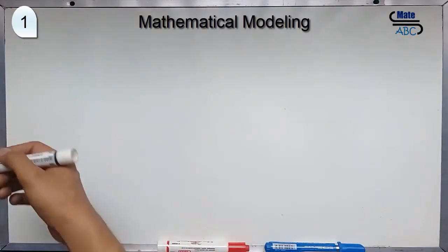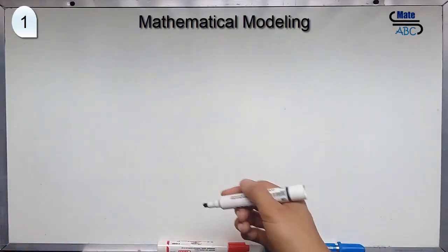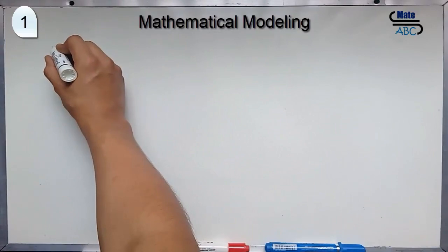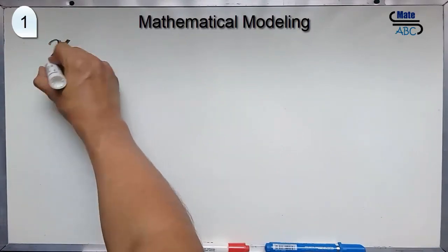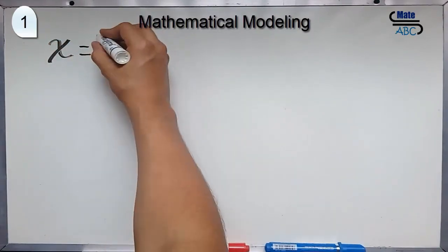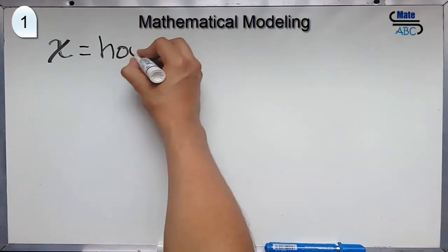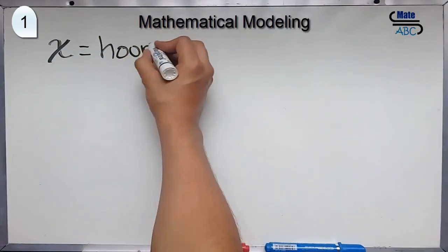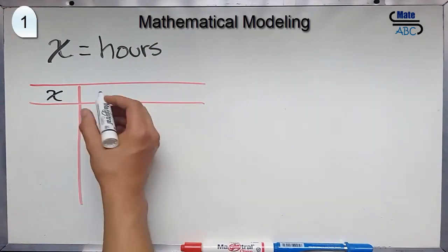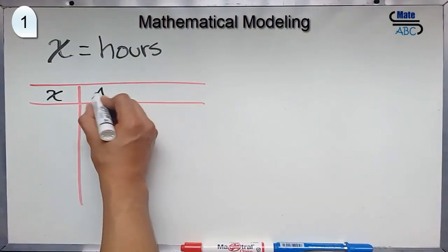This variable will be x, that will be the hours parked. This will be the x, and this will be the amount of money.